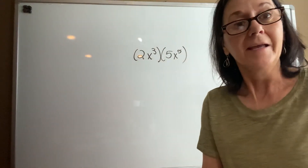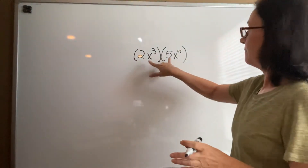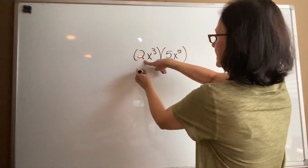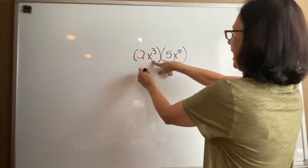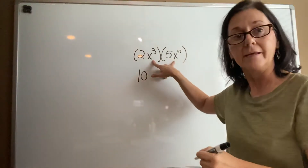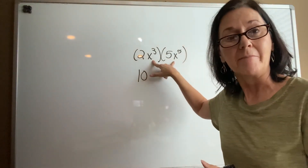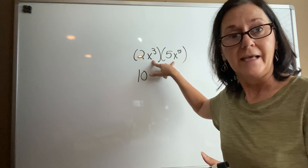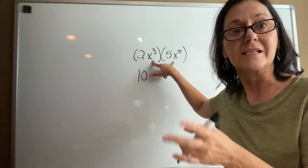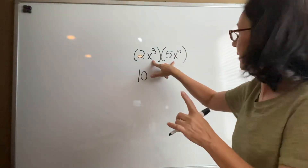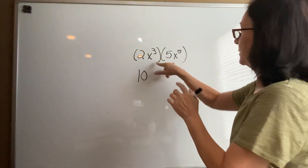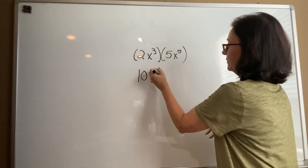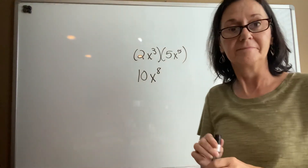For number 50, multiply the coefficients: 2 times 5 is 10. For the like variables, multiplication means addition of their exponents: 3 plus 5 equals 8. So the answer is 10x to the eighth.